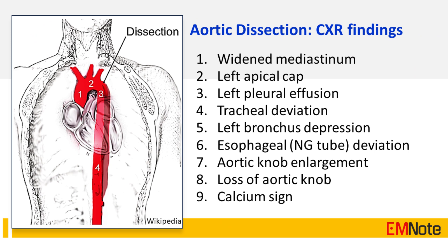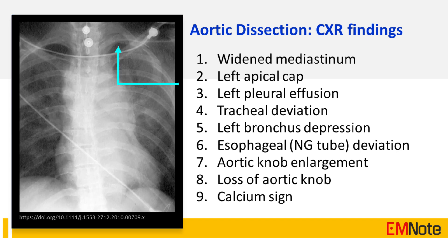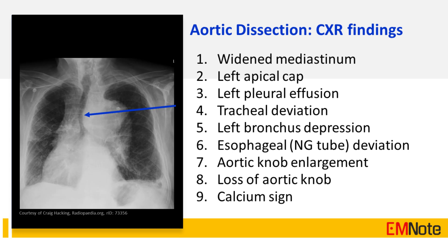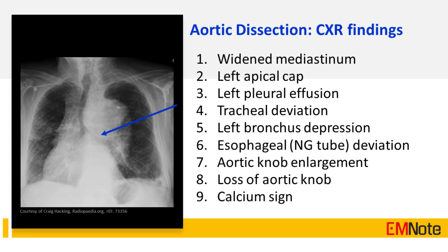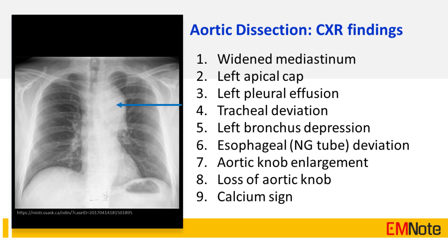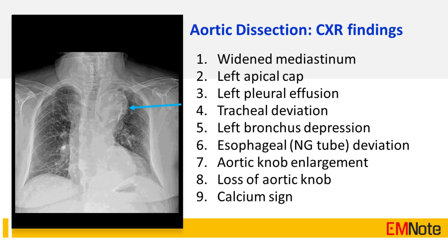In summary, the 9 chest x-ray features that suggest aortic dissection include: 1. Widened mediastinum. 2. Left apical cap. 3. Left pleural effusion. 4. Tracheal deviation. 5. Left bronchus depression. 6. Esophageal or NG tube deviation. 7. Aortic knob enlargement. 8. Loss of aortic knob. 9. Calcium sign.